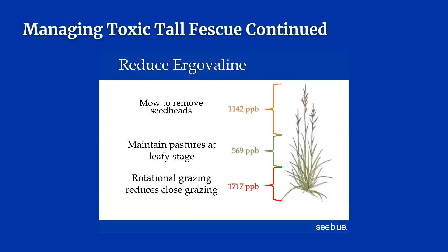Fortunately, there are several management options to reduce the negative symptoms of fescue toxicosis. Since the toxic plants will produce toxic seed, mowing before the plants become reproductive will help reduce new toxic plants from germinating. Keep in mind that the highest concentrations of toxins are present in the seed heads and stem bases of the plant, so proper mowing and prevention of overgrazing can reduce the levels of toxins present in the diet. Another way to reduce the level of toxins being ingested by livestock is dilution — having a mix of different grasses and clovers in the pasture instead of only tall fescue. Note that this doesn't always work with horses because they are such selective grazers. Red clover is a great addition to cattle pastures because the isoflavones help counteract vasoconstriction caused by toxins.